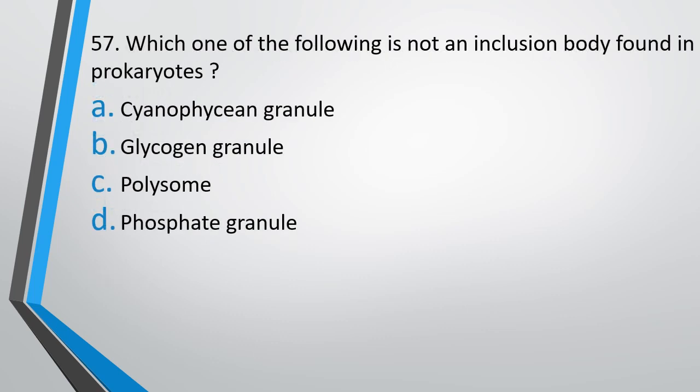Question number 57. Which one of the following is not an inclusion body found in prokaryotes? Cyanophycin granule, glycogen granule, polysome, phosphate granule. Which of the following is not an inclusion body? Correct answer is option C, polysome.